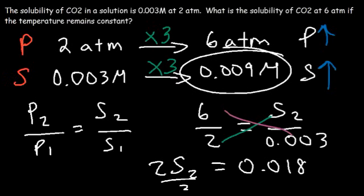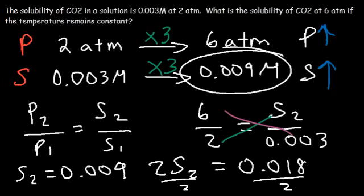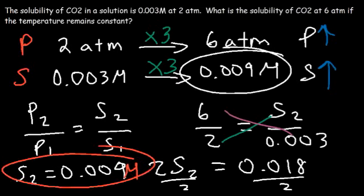So now let's divide both sides by two. 18 divided by two is 9. So the solubility at the new pressure is 0.009. So that's how you can use the equation to get the answer as well.